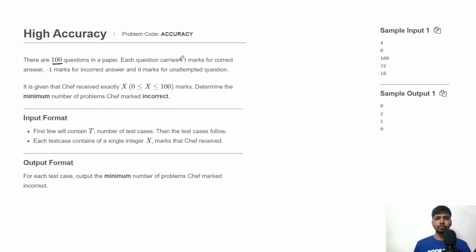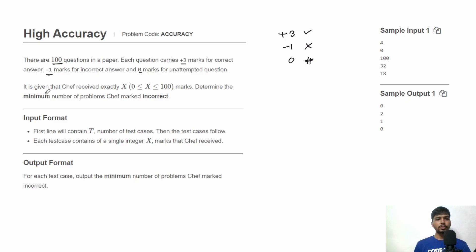There are total 100 questions in the paper. Each question carries plus 3 marks for a correct answer, negative 1 mark for an incorrect answer, and 0 marks for an unattempted question. So the marking criteria is +3 for correct, -1 for incorrect, and 0 for non-attempted.